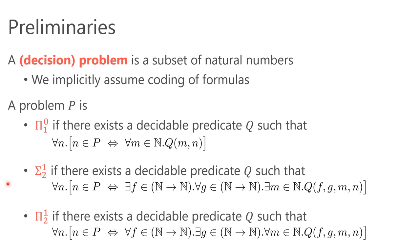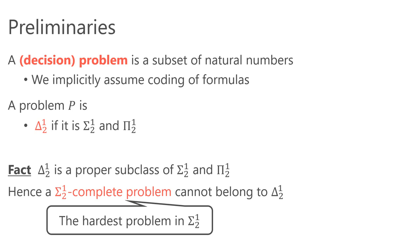In other words, a problem belongs to Π⁰₁ if it is co-recursively enumerable, or co-computably enumerable. A problem is in Σ¹₂ if it is definable by a second-order arithmetic formula of this form. The class Π¹₂ is defined similarly. The class Δ¹₂ is defined as the intersection of Σ¹₂ and Π¹₂. An important fact used in our paper is that Δ¹₂ is a proper subclass of Σ¹₂. Therefore, to prove a problem does not belong to Δ¹₂, it suffices to show that the problem is Σ¹₂-complete, which is the hardest problem in the class Σ¹₂.